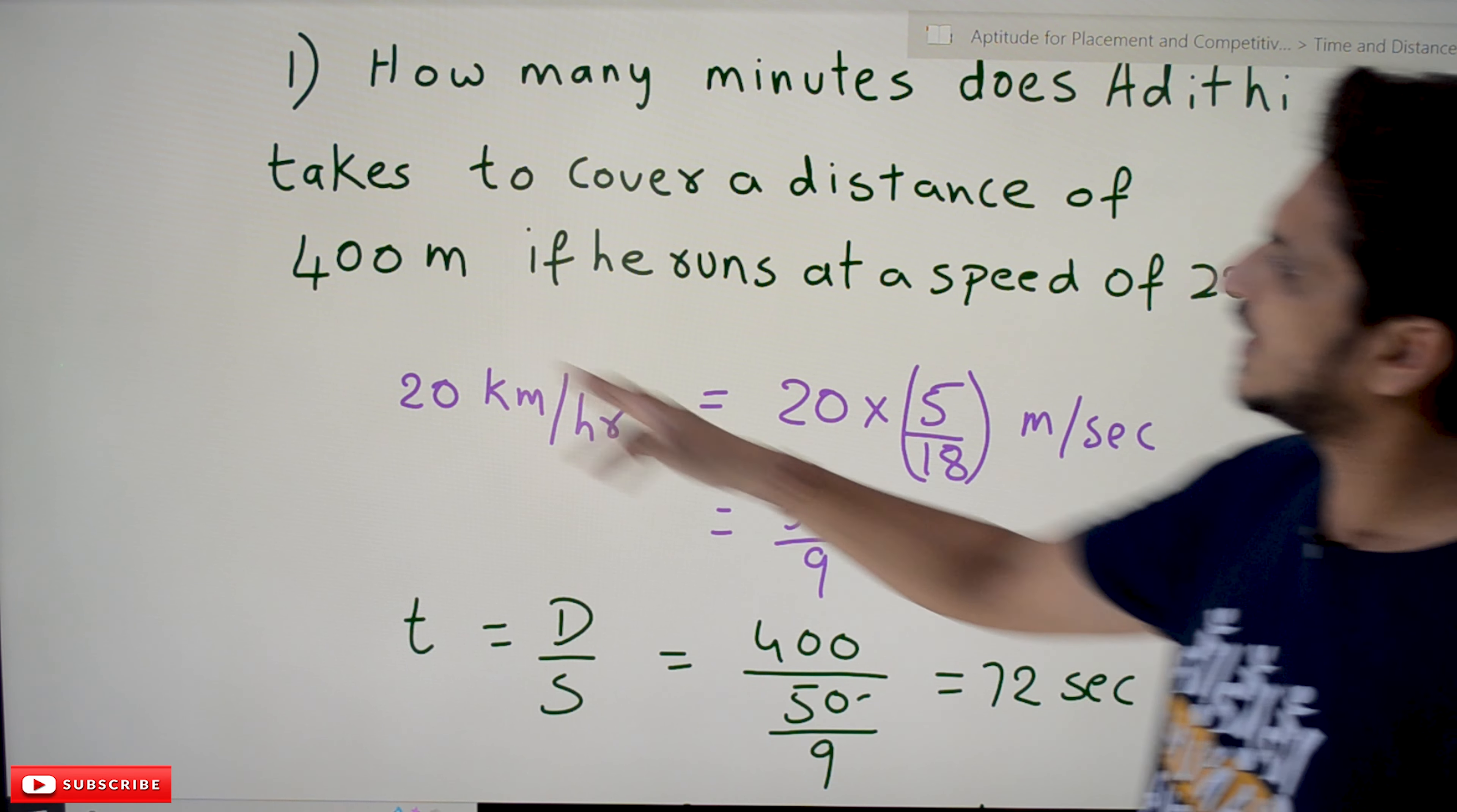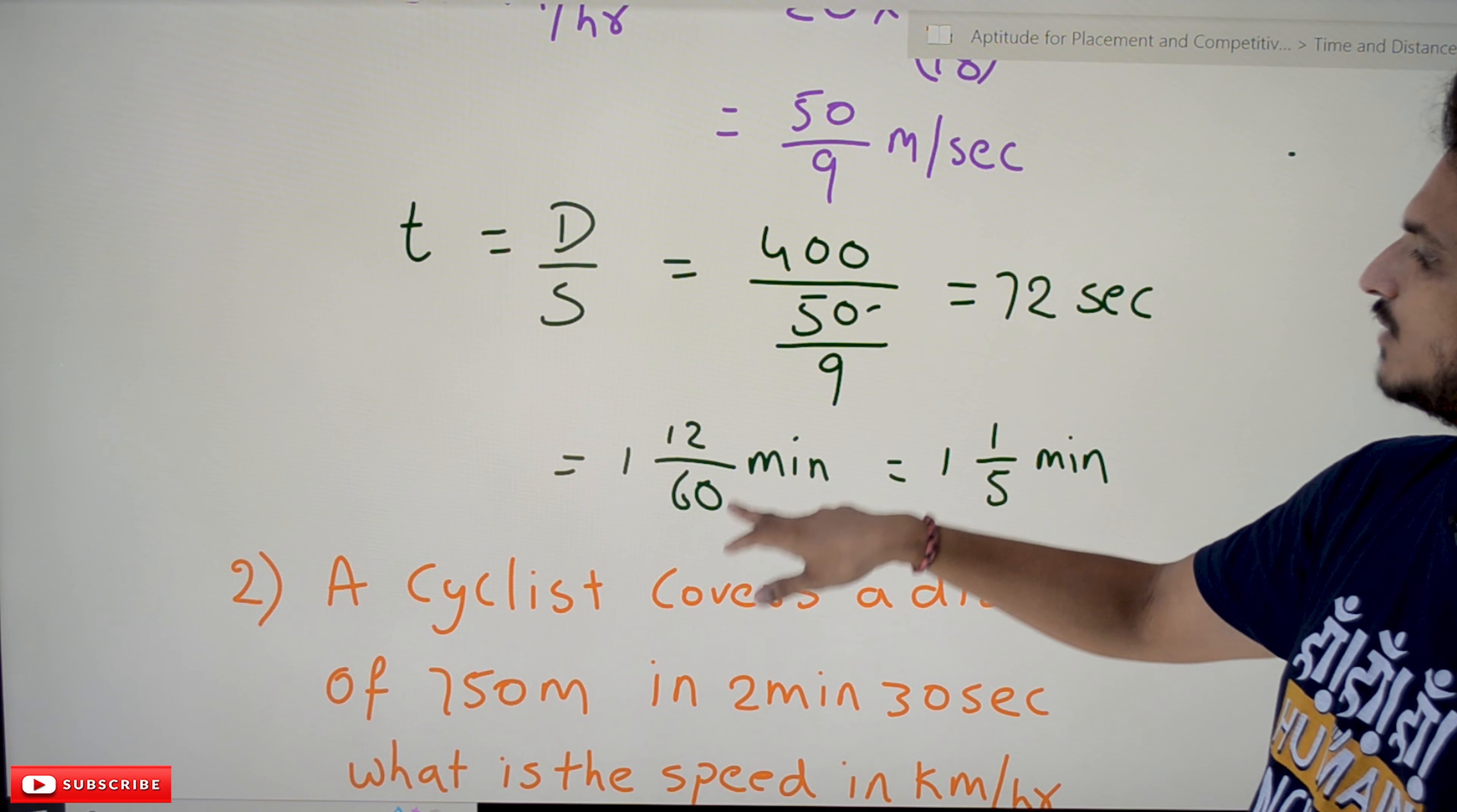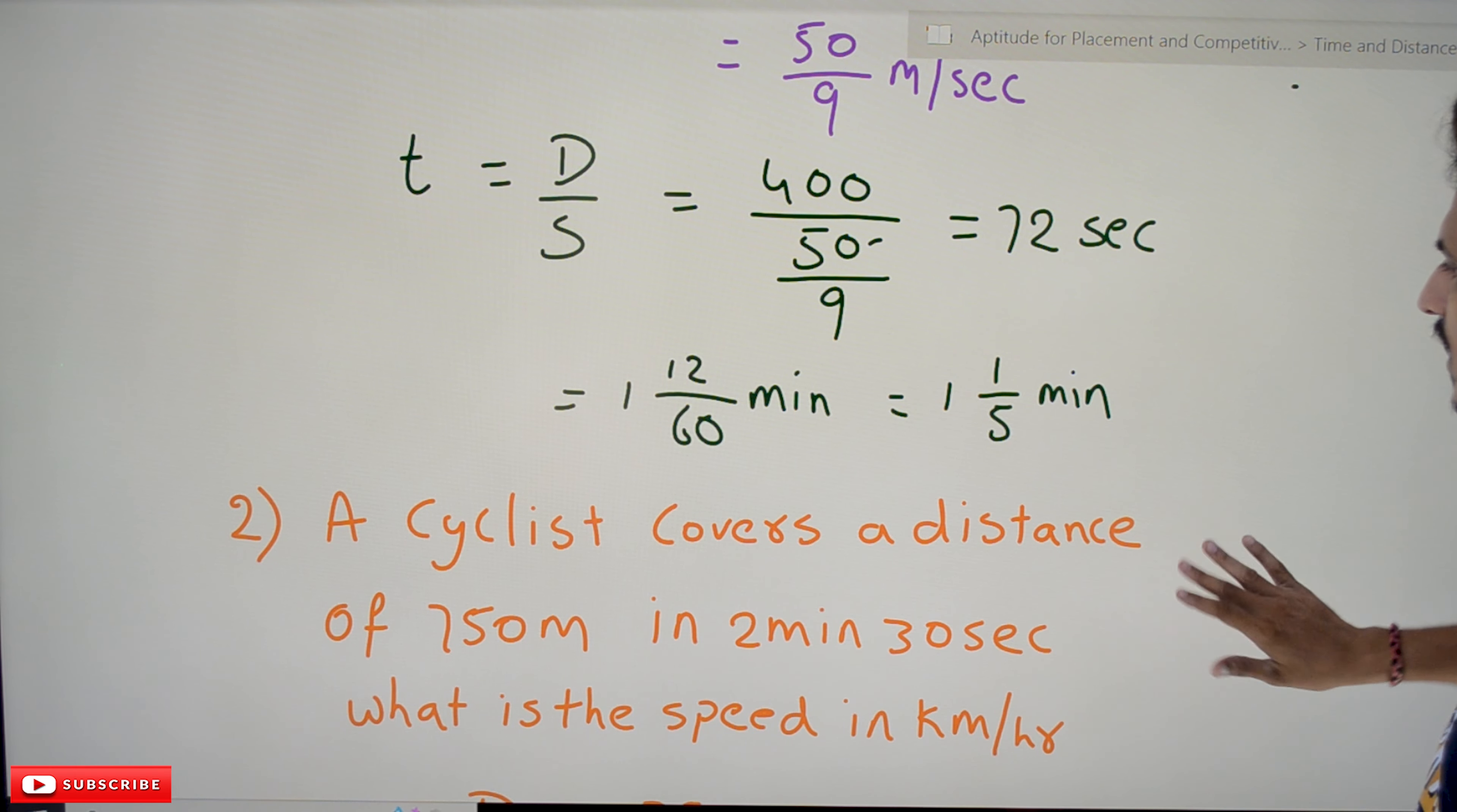Now we have to find the time. Time equals distance by speed, that is 400 meters divided by 50 by 9, which equals 72 seconds. So 72 seconds can be written as 72 by 60 minute or 1 and 1 by 5 minute, because they are asking how many minutes.